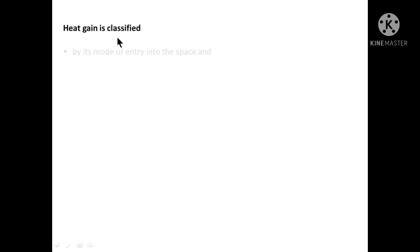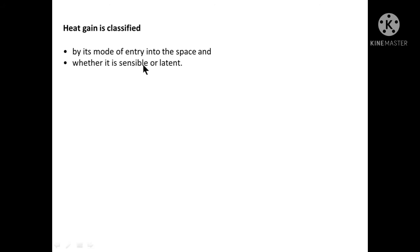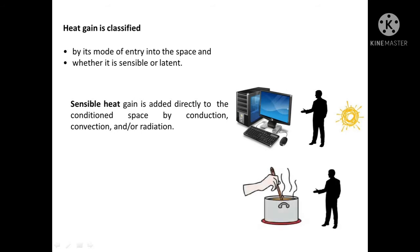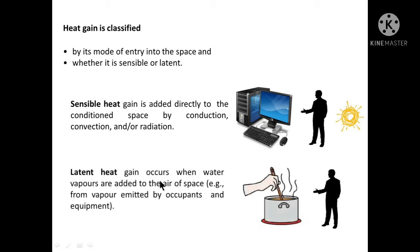Heat gain is classified in two categories: first by its mode of entry into the space, and second whether it is sensible or latent heat. Sensible heat is the heat which is directly added to the conditioned space by conduction, convection, and/or radiation. Whereas latent heat is the gain which occurs when water vapors are added to the air of the space, for example from vapors emitted by occupants and equipment.